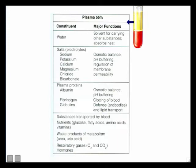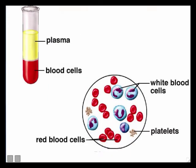Now let's look at the other part of the blood — the formed elements. Using a centrifuge to separate blood, the formed elements settle at the bottom. Under a microscope, there are actually three types of formed elements: red blood cells, white blood cells, and platelets. You can see the red blood cells, the white blood cells, and the tiny platelets.